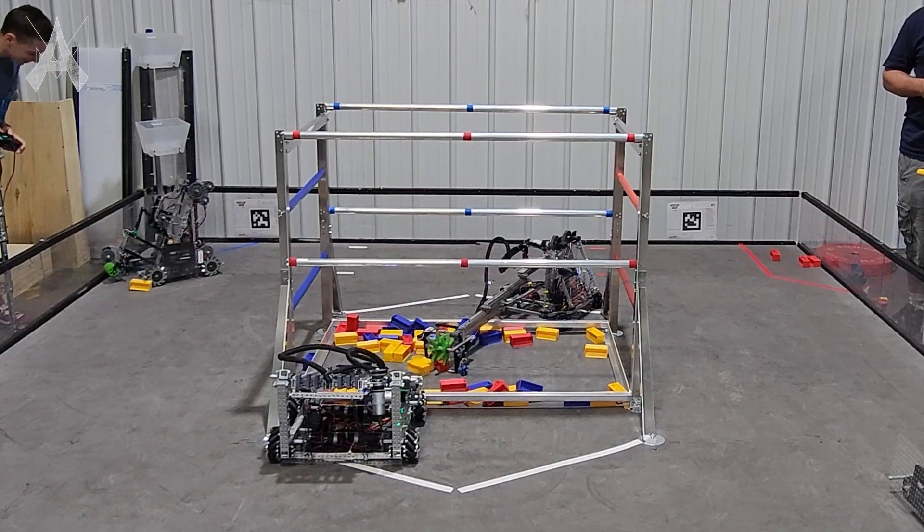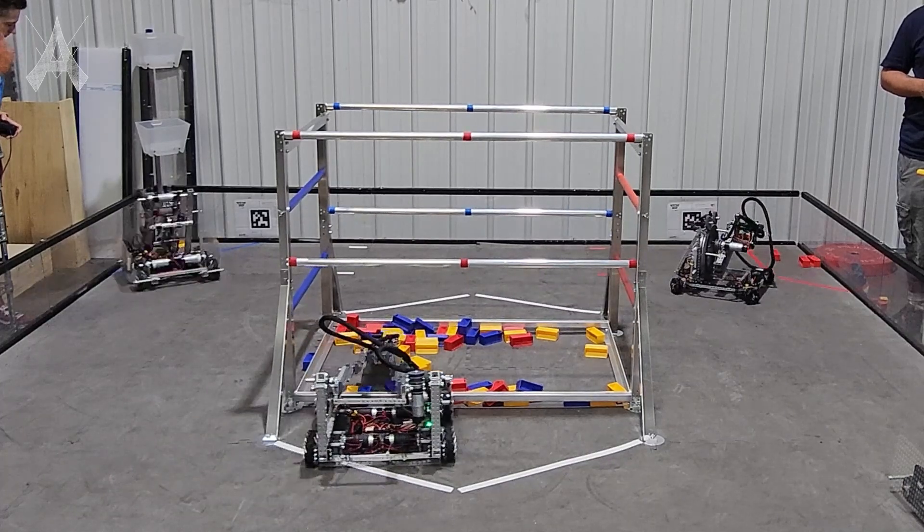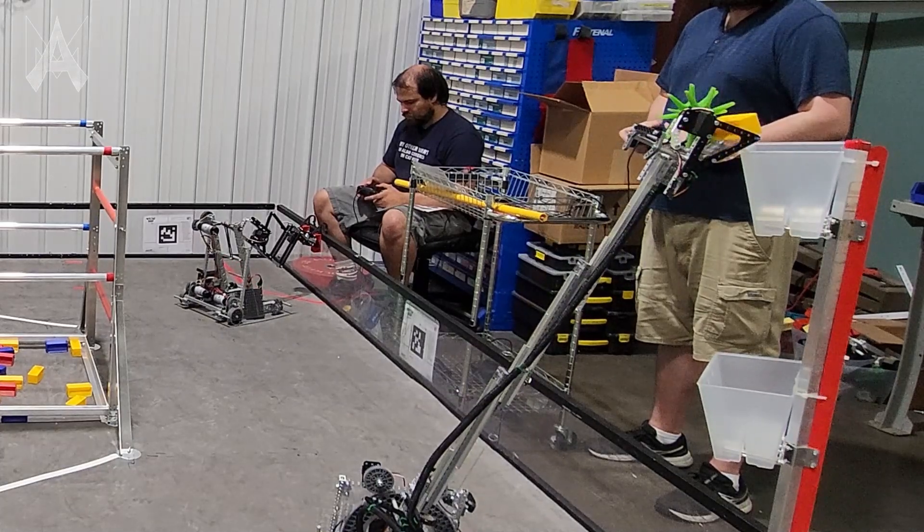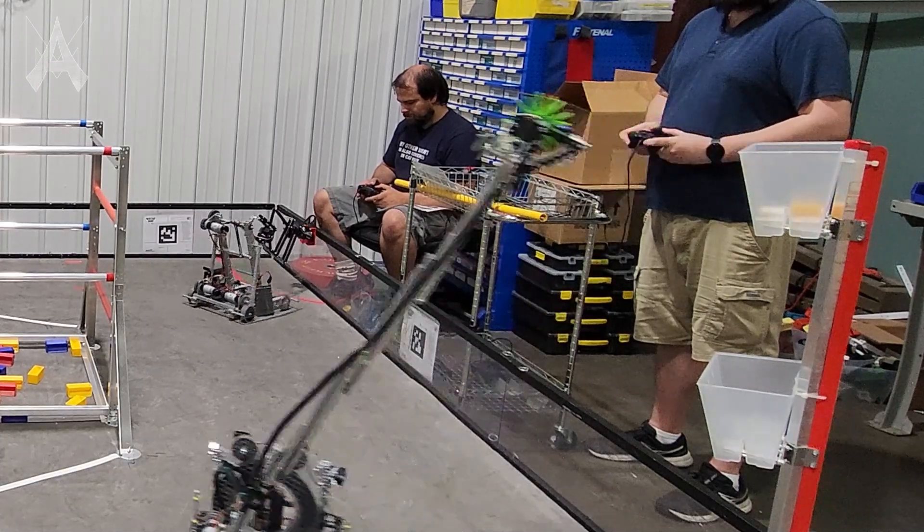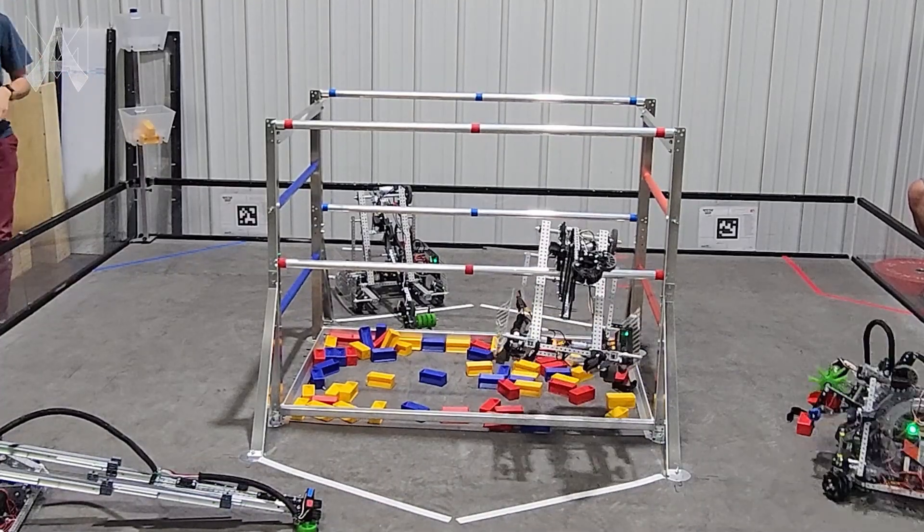Many of the core challenges in Into the Deep require your robot to reach either very far out or very far up. Collecting a sample from the submersible requires you to reach inside to collect them. Scoring the sample in the baskets requires reaching up to one of the two different basket heights or down to the net. So you may be able to repurpose some of your mechanisms to use for multiple stages of this game.